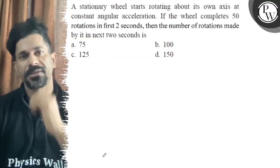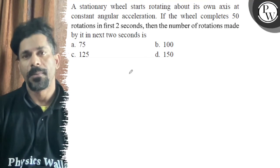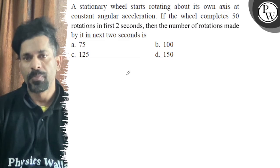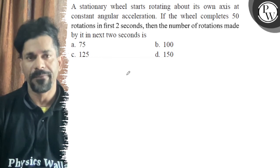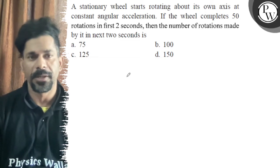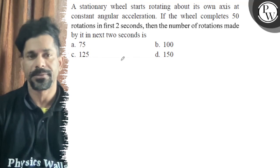Hello, let's hear the question. Today we will start rotating about an axis at a constant angular acceleration. If the wheel completes 50 rotations in the first 2 seconds, then the number of rotations made by it in the next 2 seconds is?